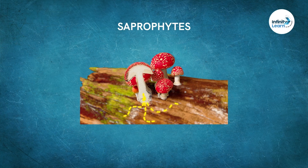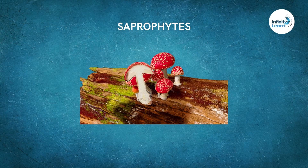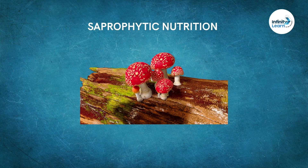The digestive enzymes from the saprophytes' body break down the complex molecules in their food — the dead matter around them. Once the breakdown is completed, they absorb the nutrients easily. This absorption occurs because the nutrients are dissolved in the water present around and are directly absorbed by the saprophytes. This is how the saprophytic mode of nutrition occurs.